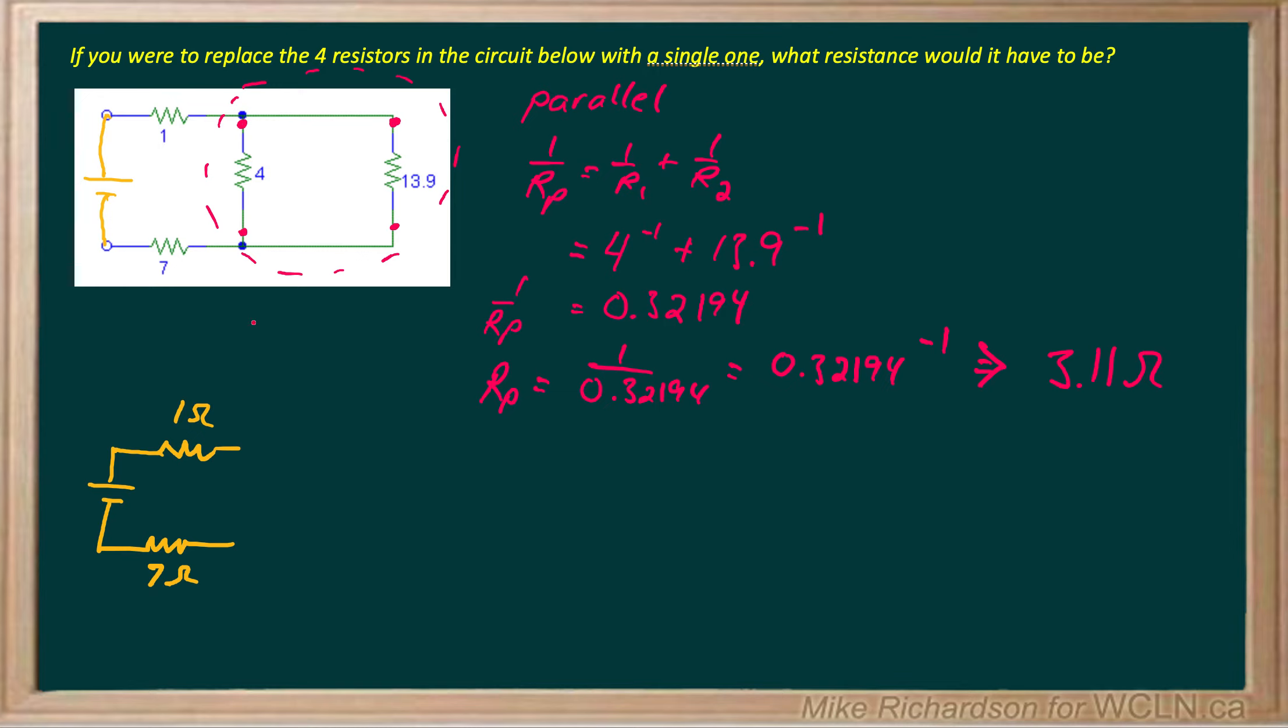And I've replaced my parallel with one simplified resistor. That is 3.11. So all of this stuff that I've circled up top has been replaced with 3.11. That's the equivalent parallel section.